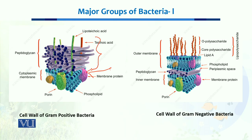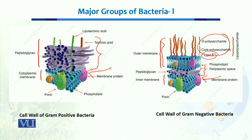When we talk about gram negative bacteria, after the cell membrane they have a very thin peptidoglycan layer, which is why they cannot retain the crystal violet dye. In addition to this thin peptidoglycan layer, gram negative bacteria have an outer membrane composed of lipopolysaccharide, which is made up of lipid A and polysaccharides.